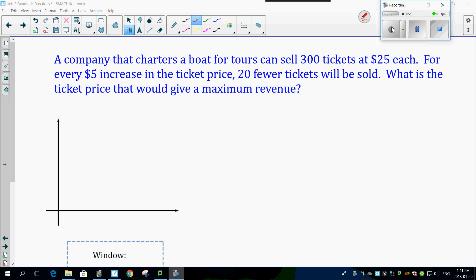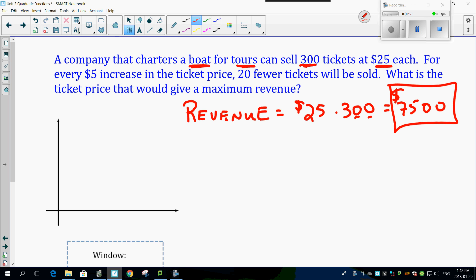A company that charters a boat for tours can sell 300 tickets at $25 each. Now let's think about what the revenue is. Revenue means how much money would you make just by selling the tickets. This is not covering costs or anything else like labor or maintenance on the boat. You're just looking at money. So money here is $25 times 300 tickets. 3 times 25 is 75, plus two zeros, you get $7,500 as soon as you sell out that boat. Now here's the problem. Are you charging enough?